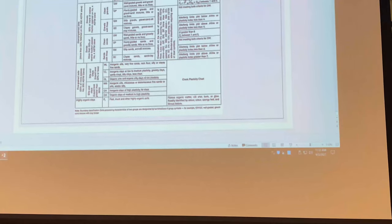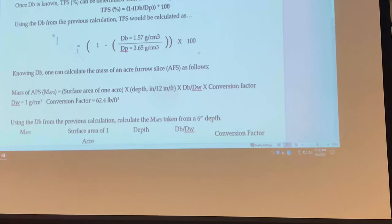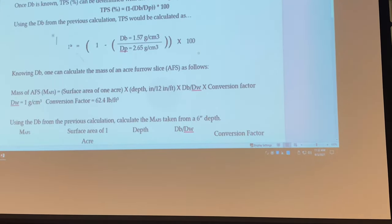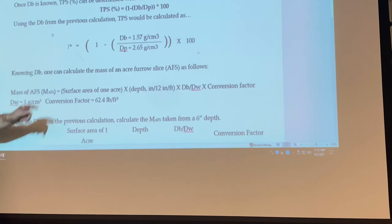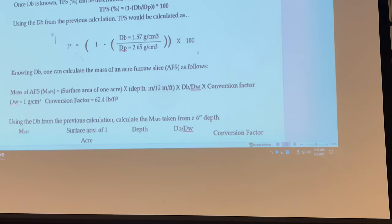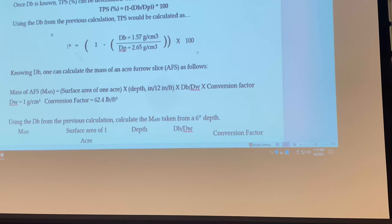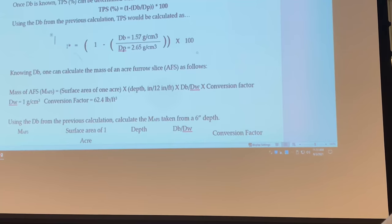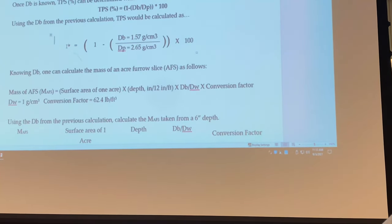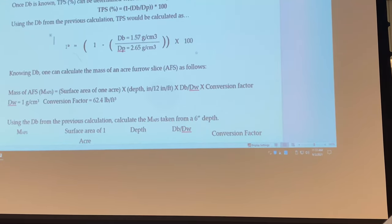Going back to the worksheet from lab: what do we come up with for our bulk density and pore space for this calculation? We do one minus the ratio, multiply times 100, and that gives us 40.75 percent pore space.